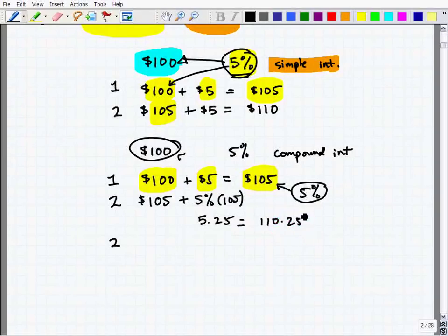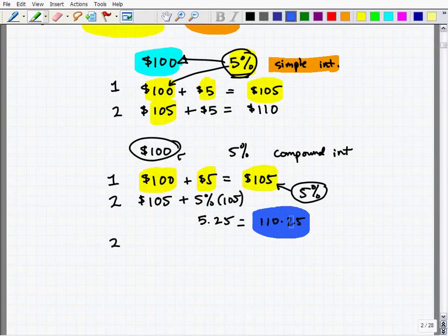So the total in year two will be $5.25 plus your $105 is $110.25. So you're saying, well, it's really not much of a difference here. Compound interest, after year two, I had $110.25. It's only $0.25 more because in year two, with simple interest, it's only $110. But here is a major, major misconception.